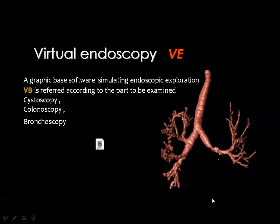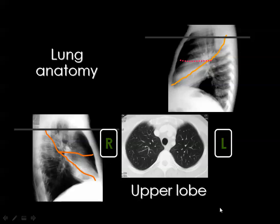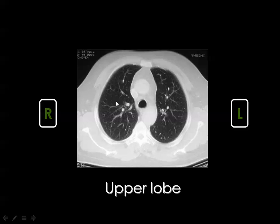Now we continue with lung anatomy — first lobar anatomy, then segmental anatomy. On the right side there are two fissures: the oblique (major) fissure and the horizontal (transverse) fissure. On the left side there is the oblique fissure, and we can imagine a fissure separating the lingula from the rest of the upper lobe — though the lingula is actually part of the left upper lobe. The anatomic landmark is the trachea: wherever you see the trachea, you are cutting through the upper lobe on both sides.